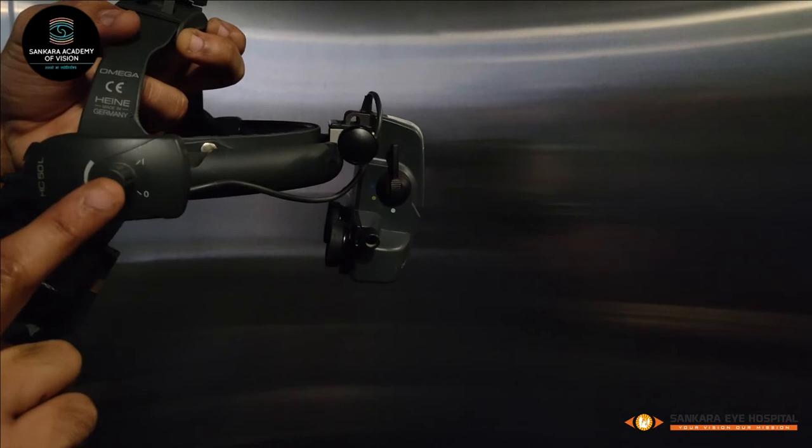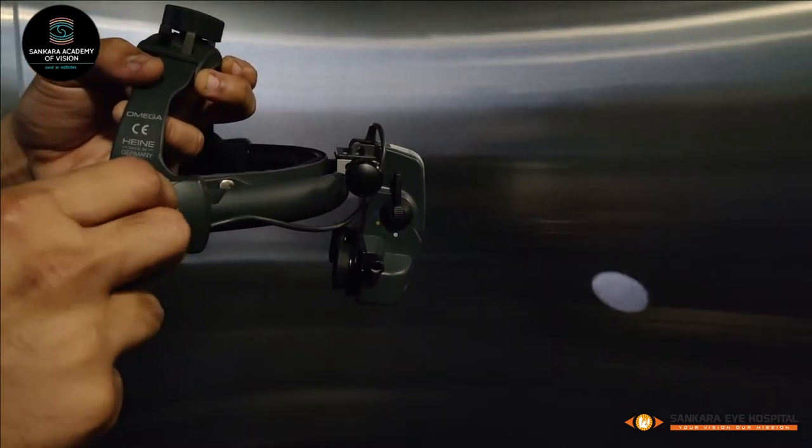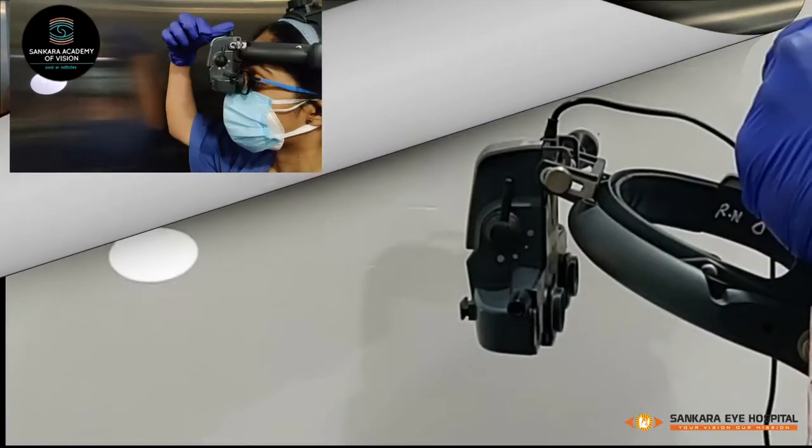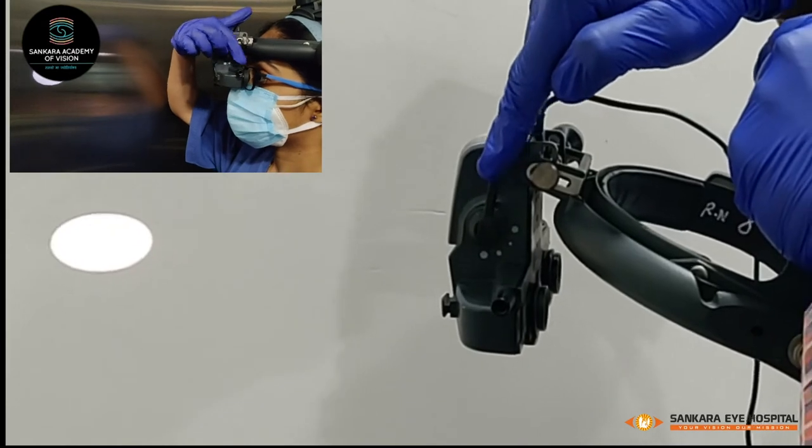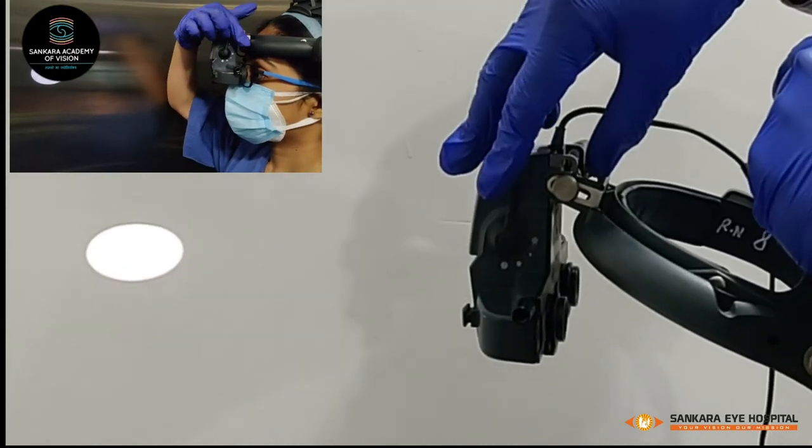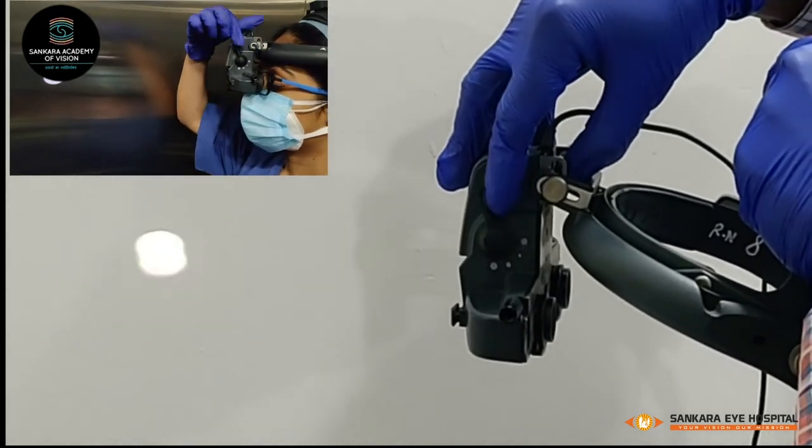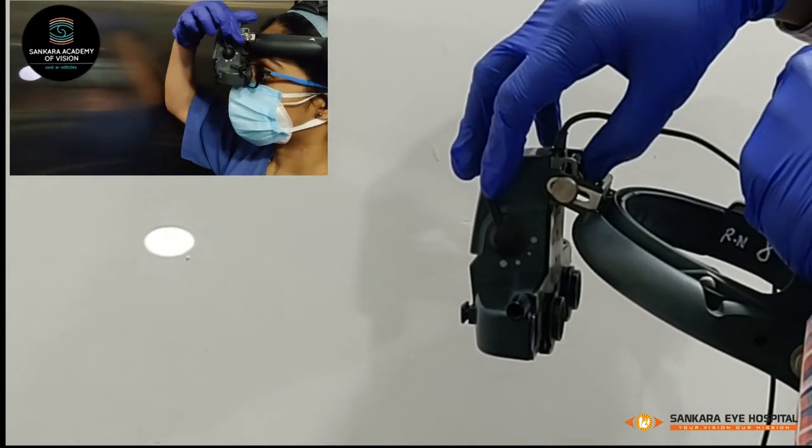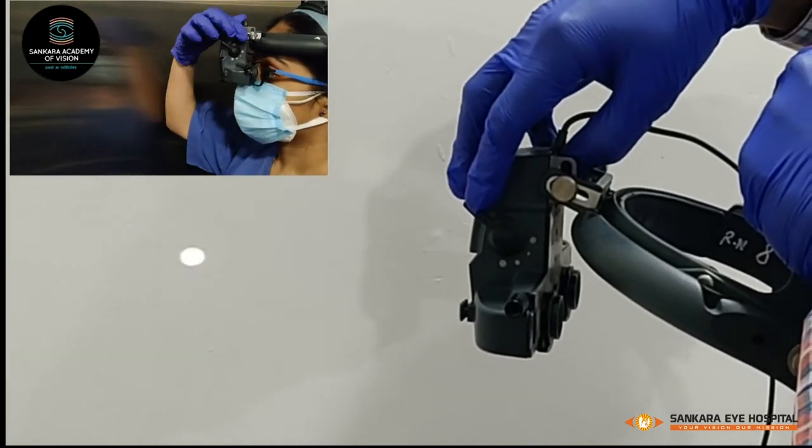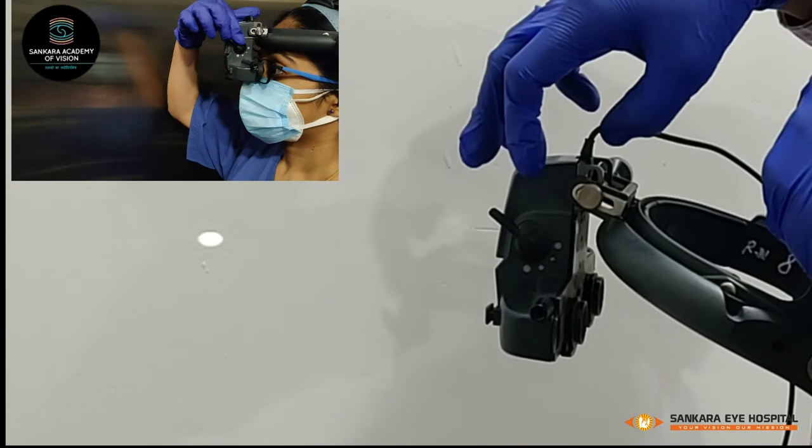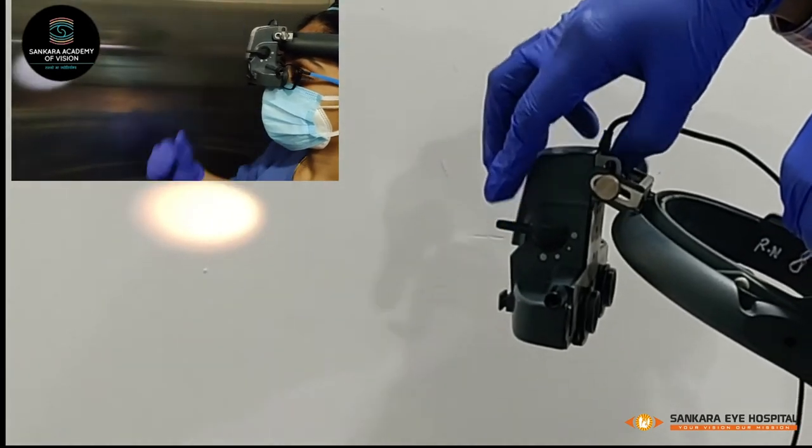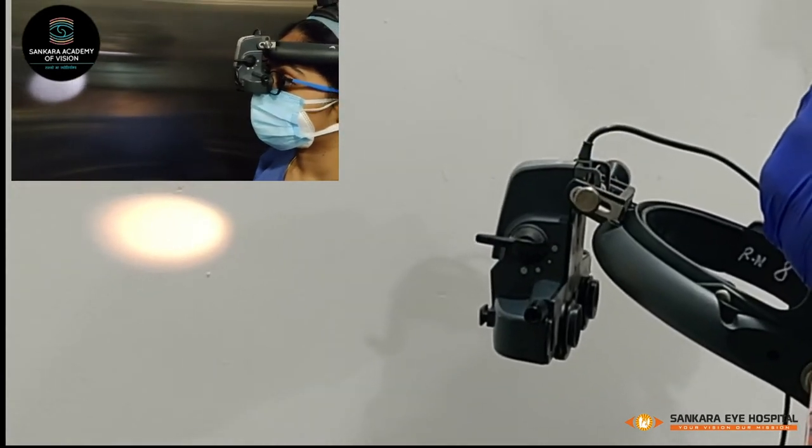A rheostat adjusts the intensity or brightness of the beam. The aperture adjustment knob provides options: a larger light spot is used for a fully dilated pupil, and intermediate and smaller apertures for a smaller or undilated pupil. The diffuser is recommended for more extensive peripheral retinal examination.